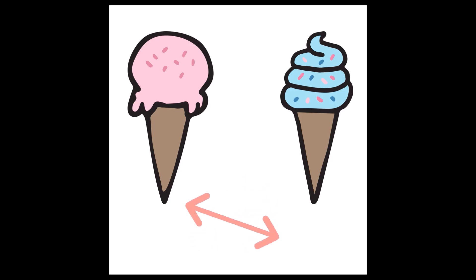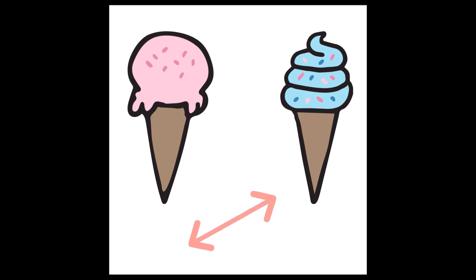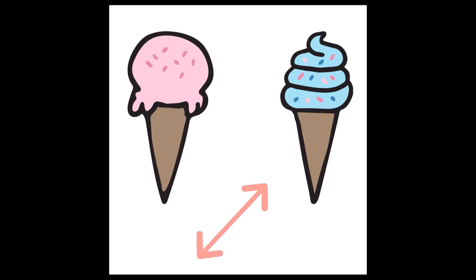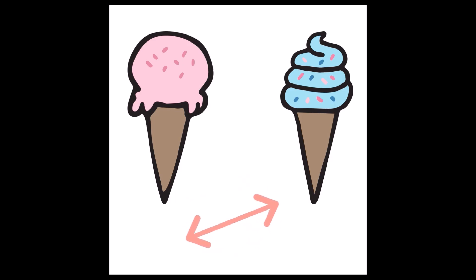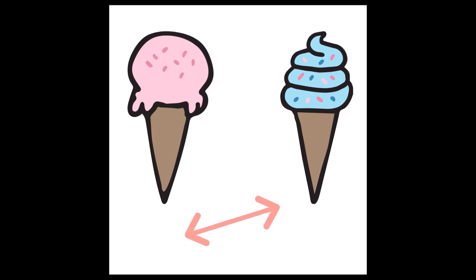What else did you notice? How about the shape of the ice cream? They're different, aren't they? The pink one is round and the blue one is swirly, kind of like a snake. Did you notice that too? And the last item that's different was the sprinkles — the pink one has pink sprinkles and the blue one has colored sprinkles. So there are three things that are different.